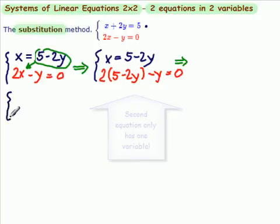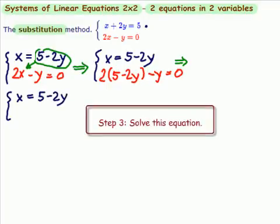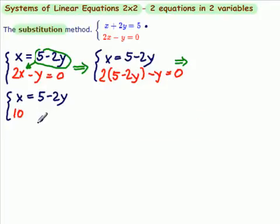So, what do we do? We rewrite the top equation and we start to clean up and solve the second equation for y. 2 times 5 is 10. 2 times minus 2y is minus 4y. That's this part. Now, we have the rest minus y equals 0.